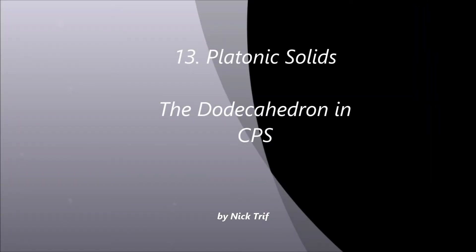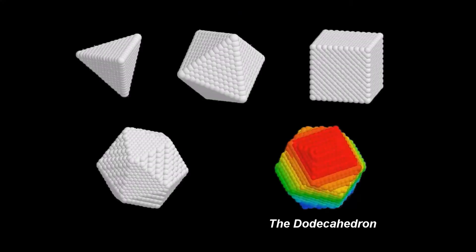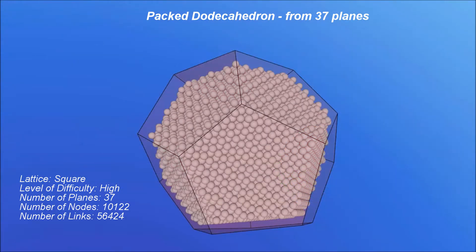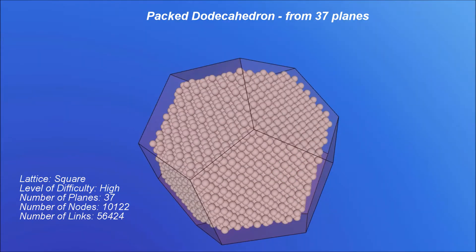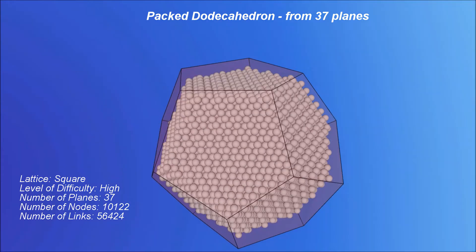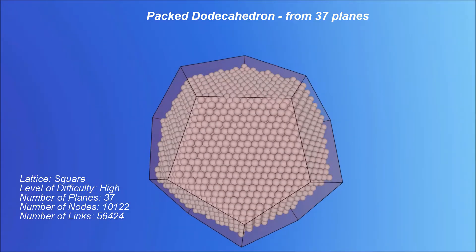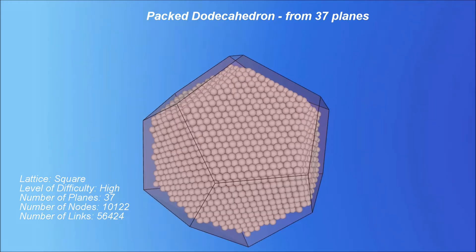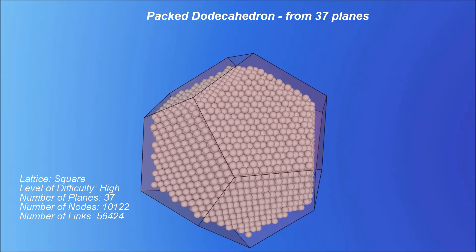Chapter 13: Platonic Solids — the dodecahedron in CPS. As we have done for the previous platonic solids, let's have a look first at the dodecahedron in CPS, as the proof of its existence as a perfect body.